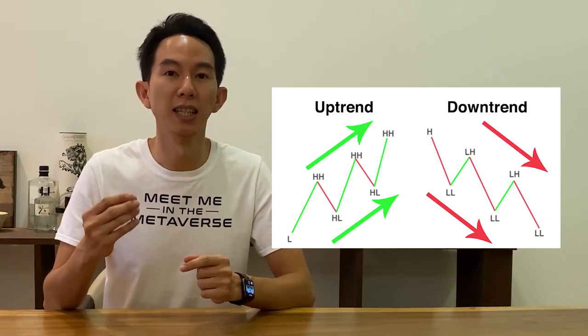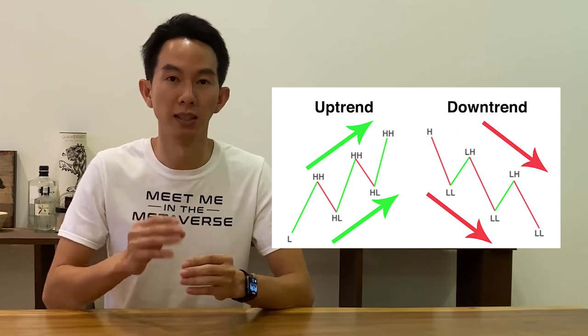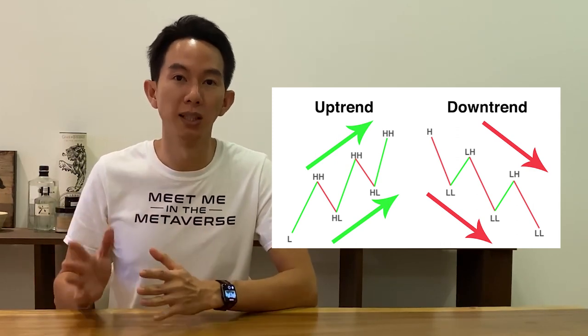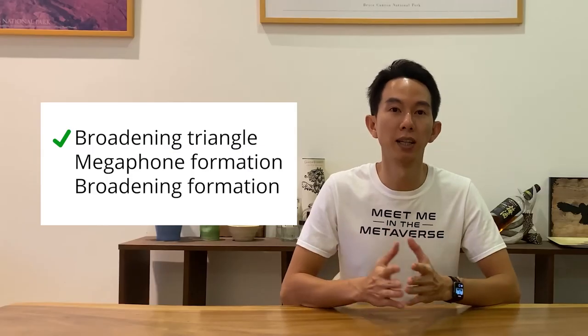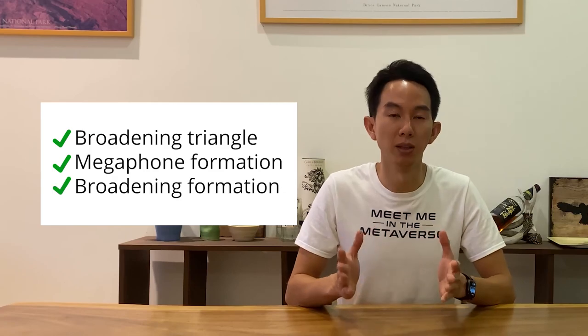Since the expanding triangle exhibits neither higher highs and higher lows, which is an uptrend, nor lower highs and lower lows, which is a downtrend, this makes it hard to pinpoint the current trend. Historically, it also has many names associated with the same pattern — besides the expanding triangle, it is also called the broadening triangle, the megaphone formation, and the broadening formation.